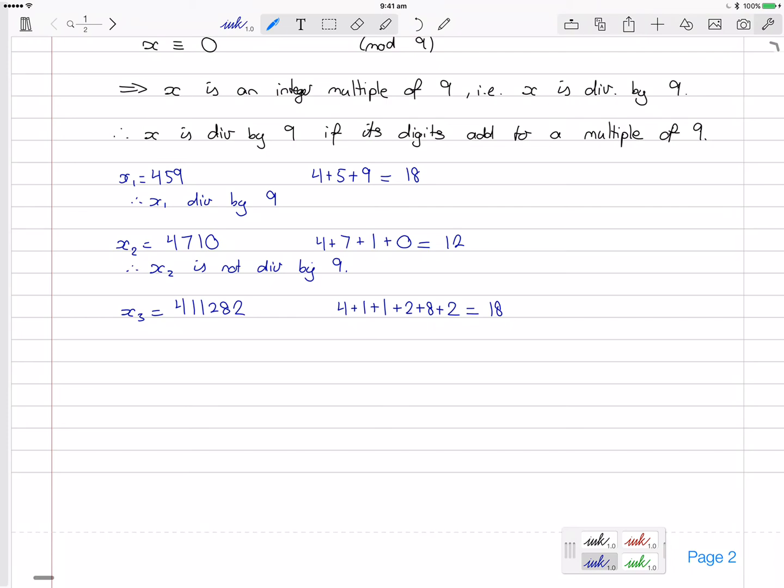18 is a multiple of 9. So therefore, this is divisible by 9. In fact, I had worked this one out earlier. This is x3 is actually equal to 9 times 45,698. I believe that's correct. But you can double check that for yourself. Okay, so that's the divisibility by 9.